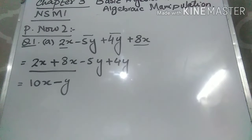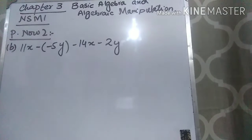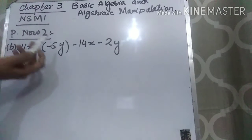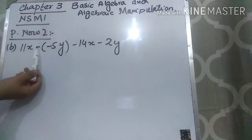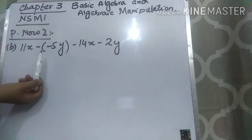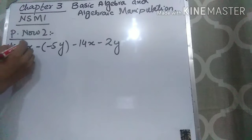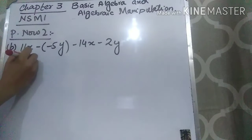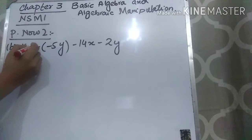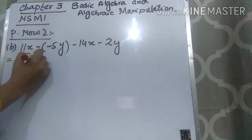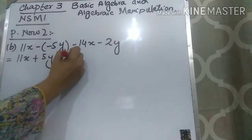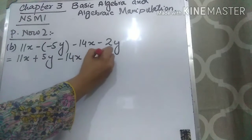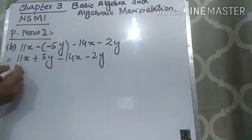Now let's come to Part B: 11x minus minus 5y minus 14x minus 2y. Here you can see that two signs are coming together. Wherever two signs come together, the very first step is to multiply those signs. So minus multiplied by minus gives plus 5y. Write the rest of the terms as they are.